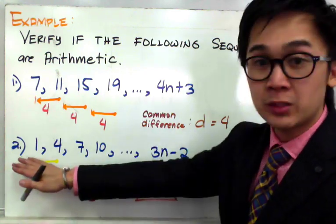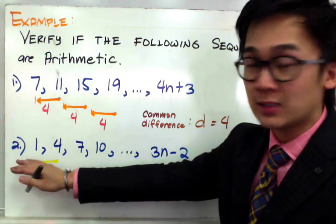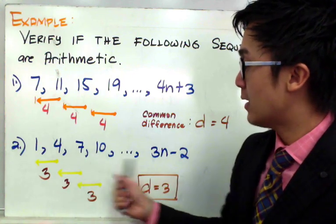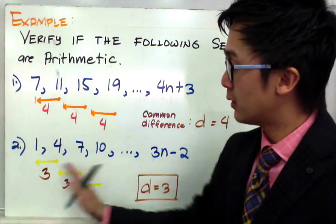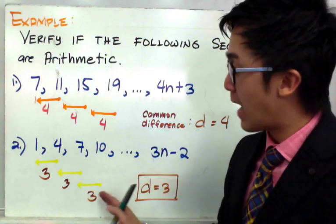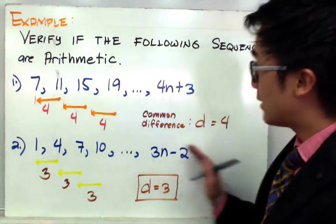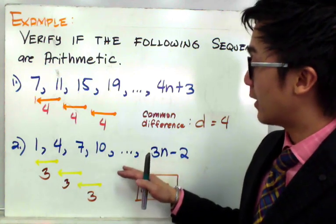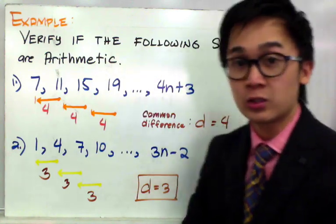For example number 2, we're going to do the same method — we will find the common difference if it exists. For the sequence 1, 4, 7, 10, given by the formula 3n minus 2: 4 minus 1 is 3, 7 minus 4 is 3, and 10 minus 7 is also 3. They have a common difference, so this is an arithmetic sequence.